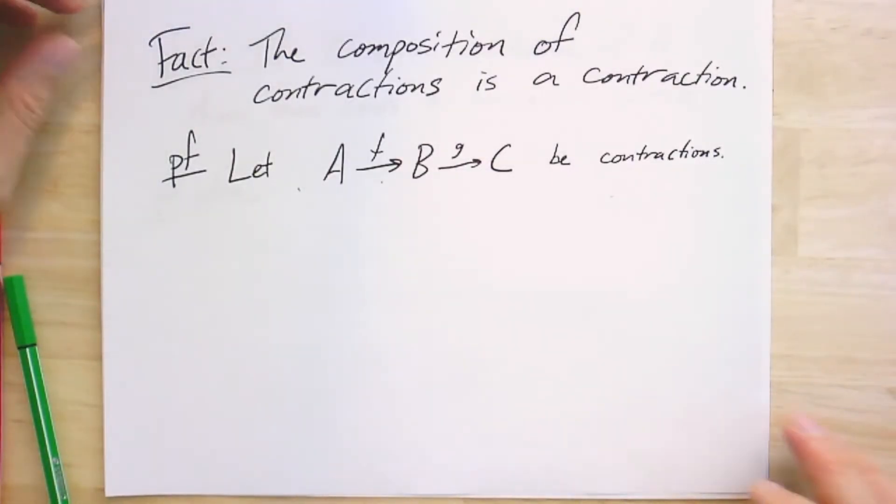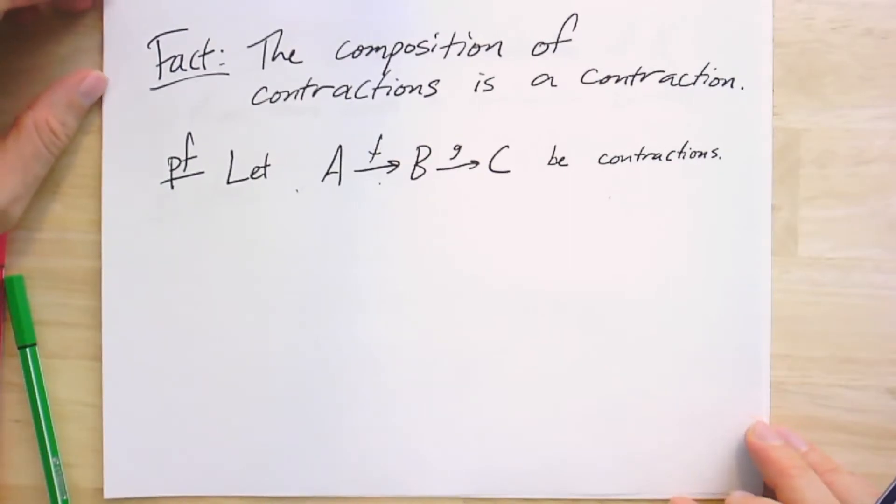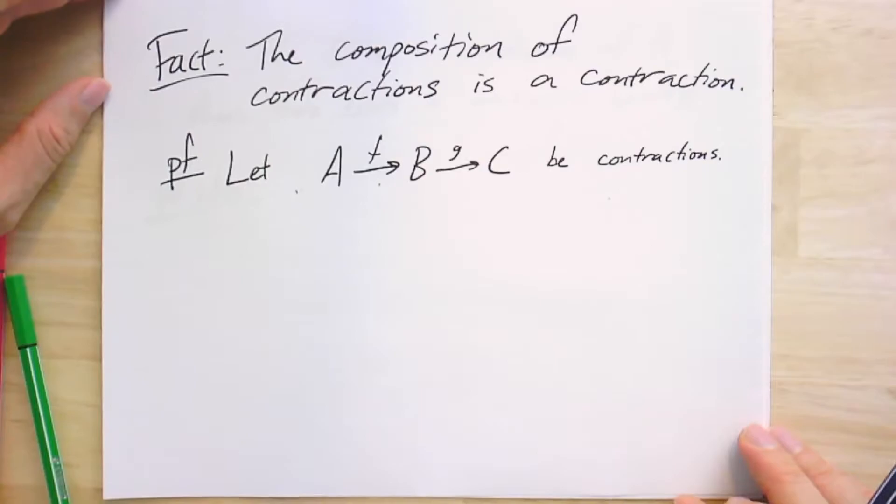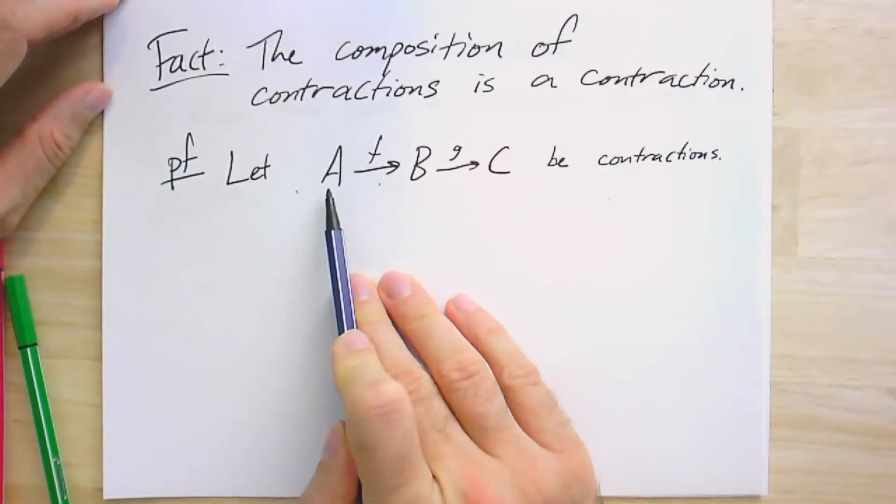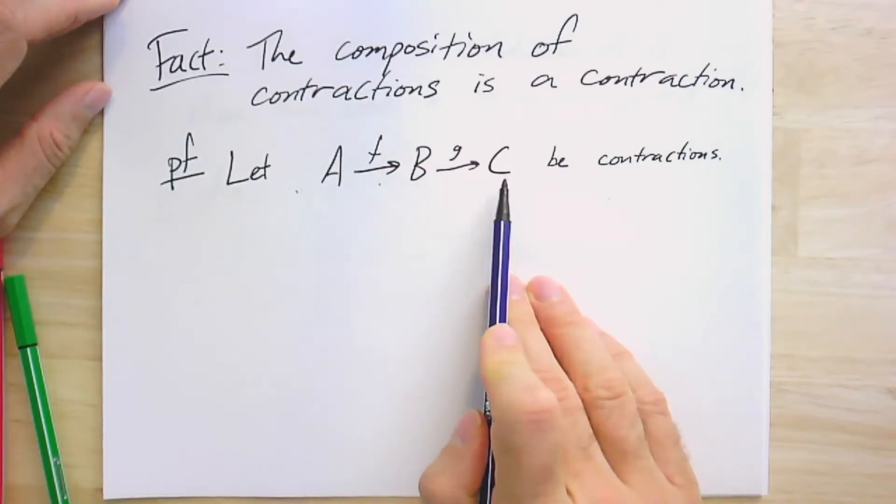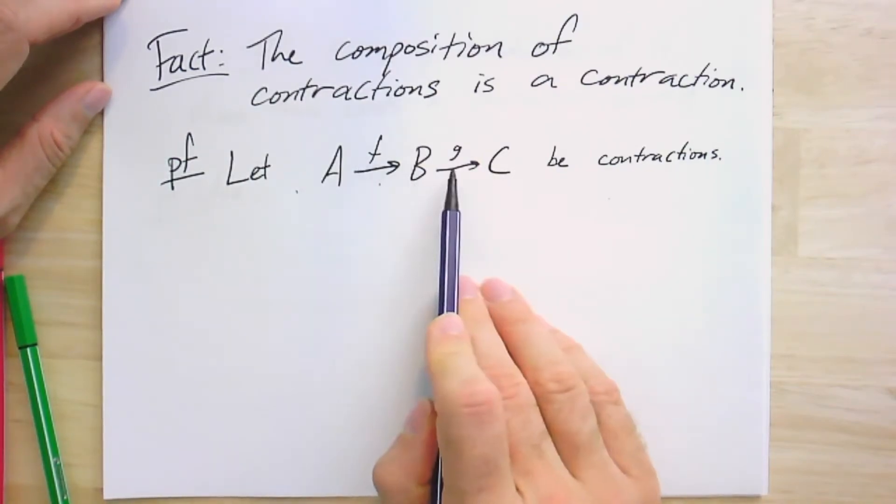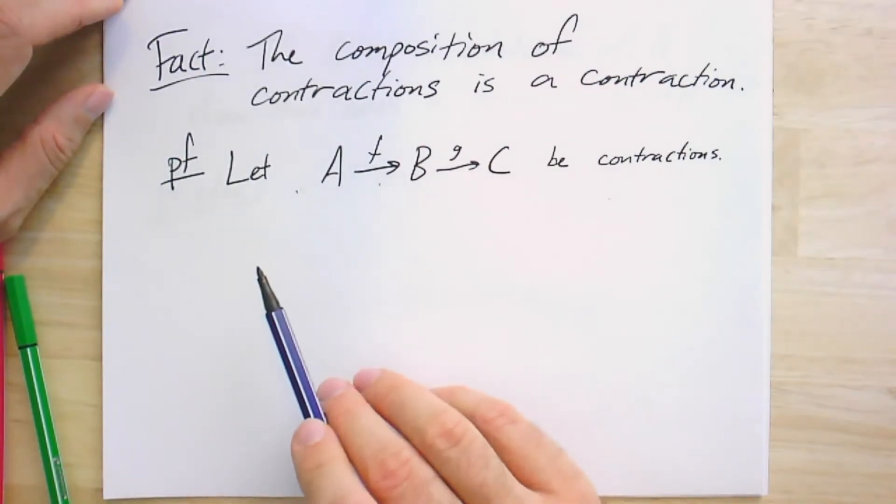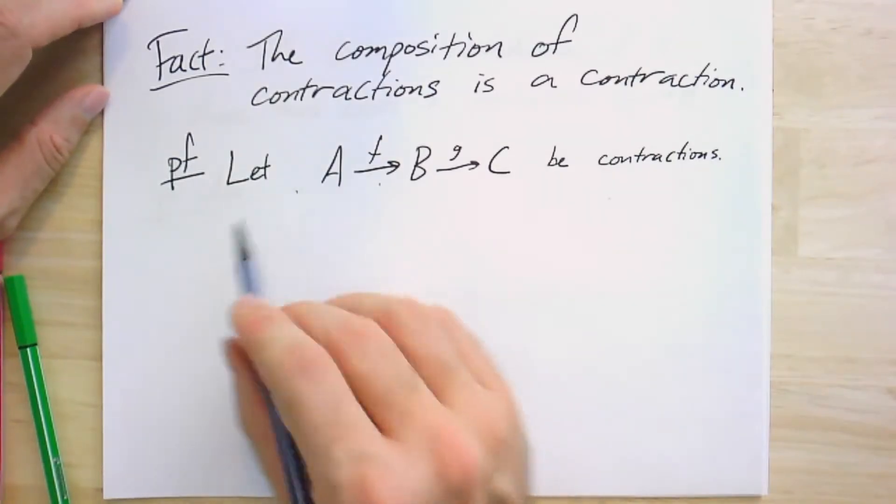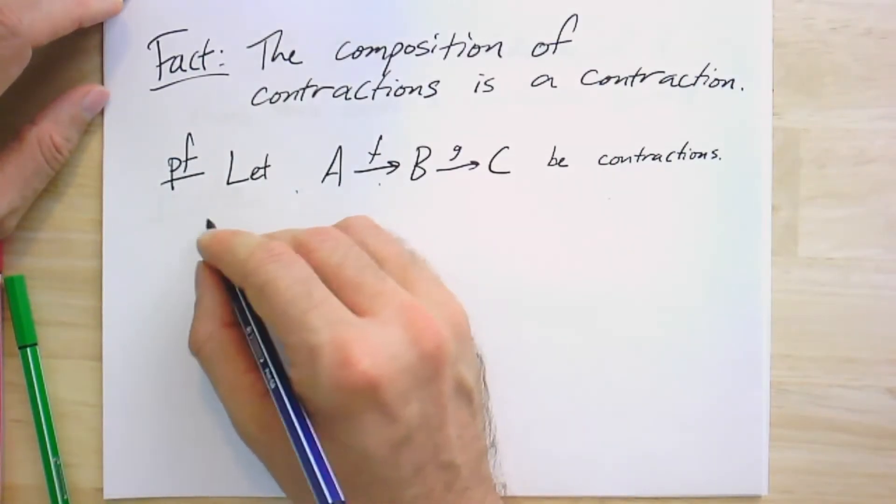So one important nice fact about these contractions is that if you compose two contractions, you get another contraction. So imagine I have A and B and C are graphs. F and G are contractions. So they're surjective simplicial maps.